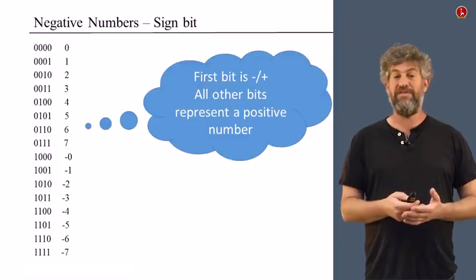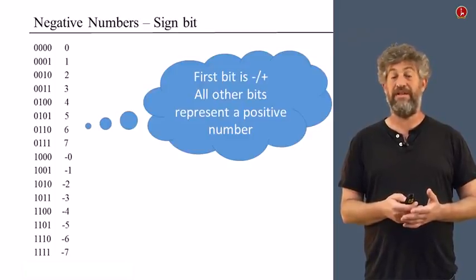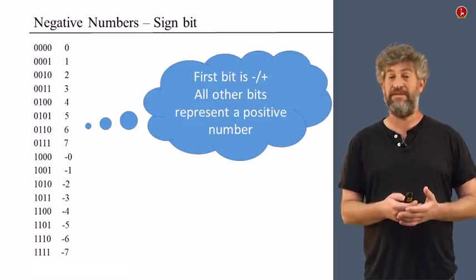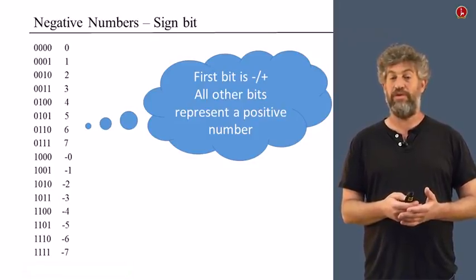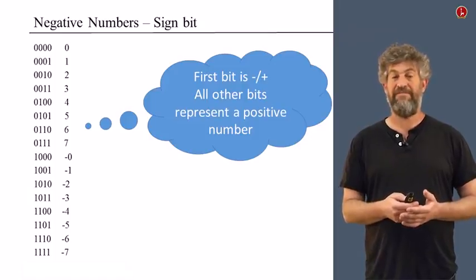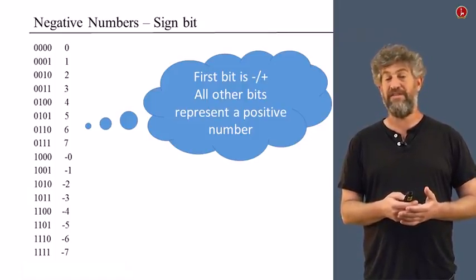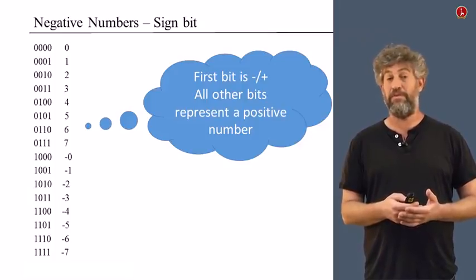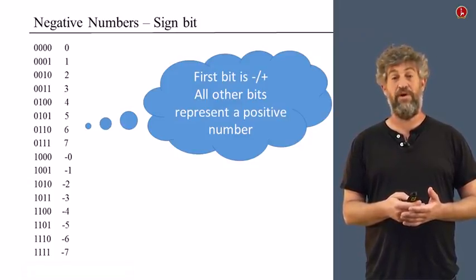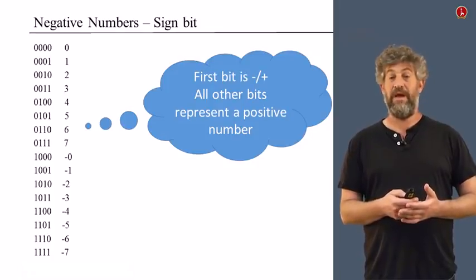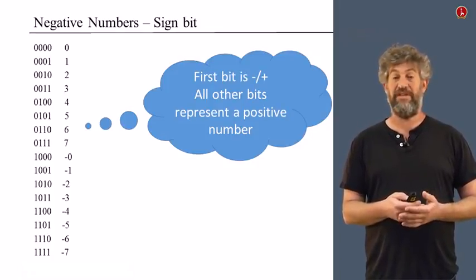So how can we do that? Well, the simplest thing you may consider, and it was used sometimes, was to basically take the first bit and use it as a sign bit. And then you have n minus 1 more bits in general to represent the actual number. So if it starts with 0, it's going to be just a positive number. If the first bit is 1, then the next three bits represent a negative number. In this case, we can represent 0, 1, 2, all the way up to 7, and then negative 0, negative 1, all the way up to negative 7.